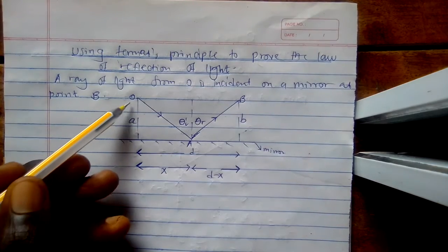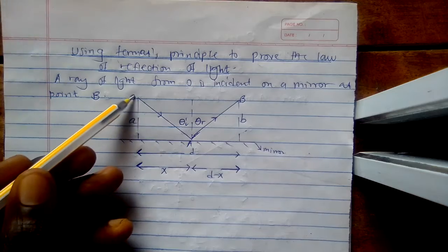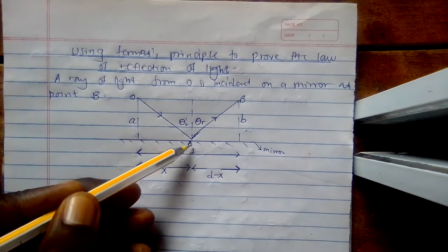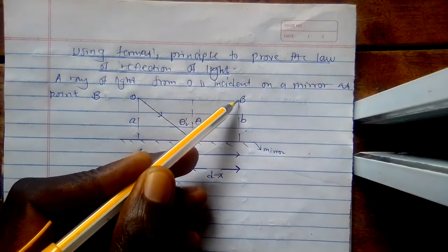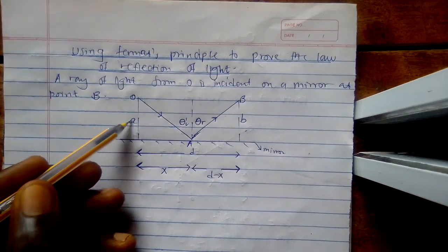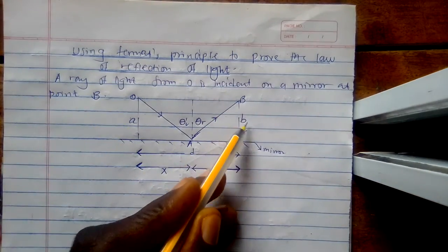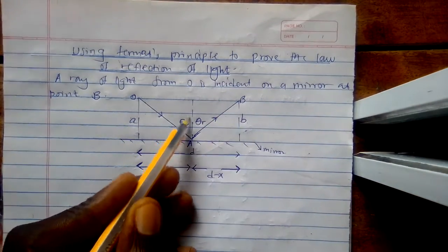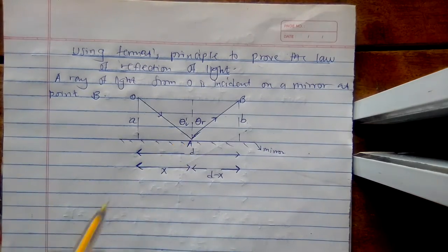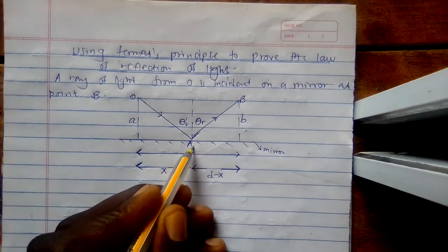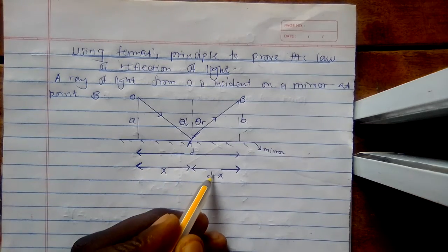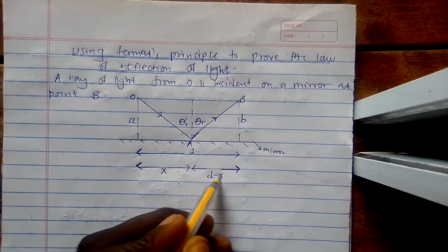We have a ray of light from point O incident on the mirror at A, and it is reflected to B. This distance here is a, and this distance here is b. This is the angle of incidence and here is the angle of reflection. We have this distance as D, and this is x, and this is D minus x.